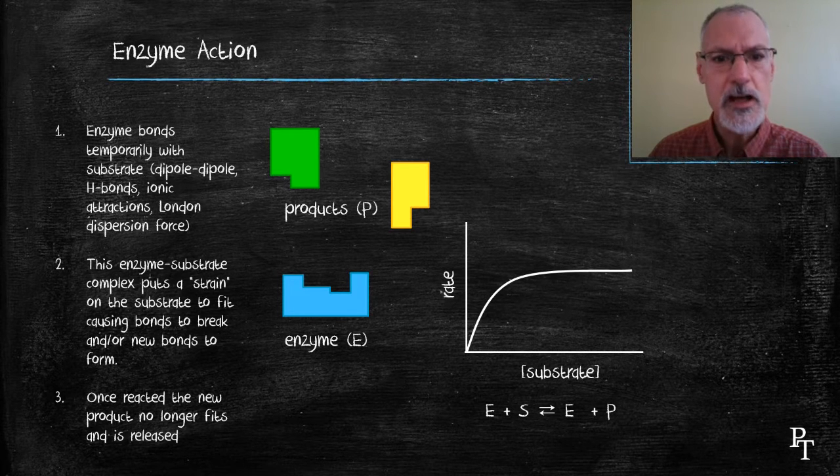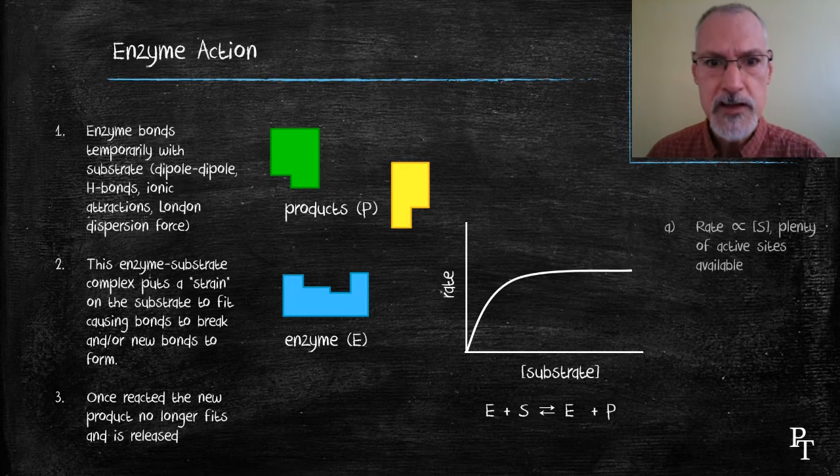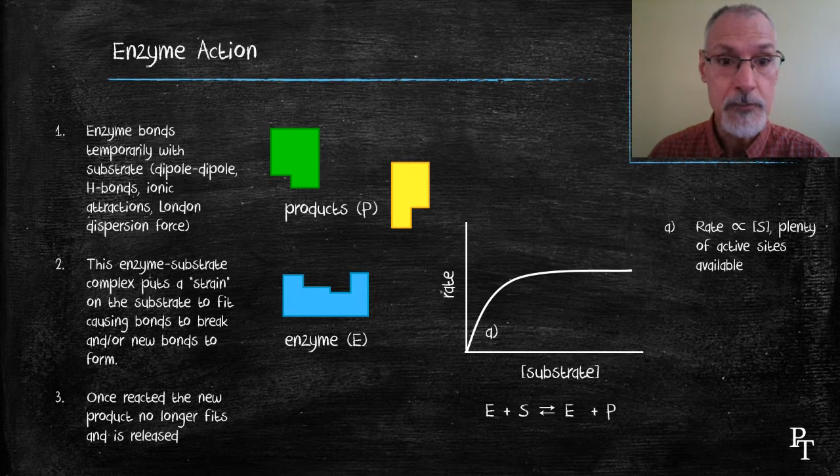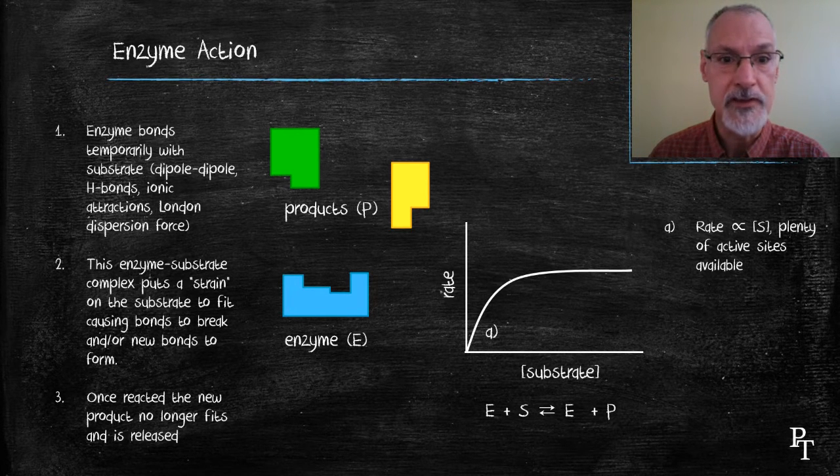Initially, our reaction begins with the rate being proportional to the concentration of the substrate. That happens because we have plenty of available enzyme sites.